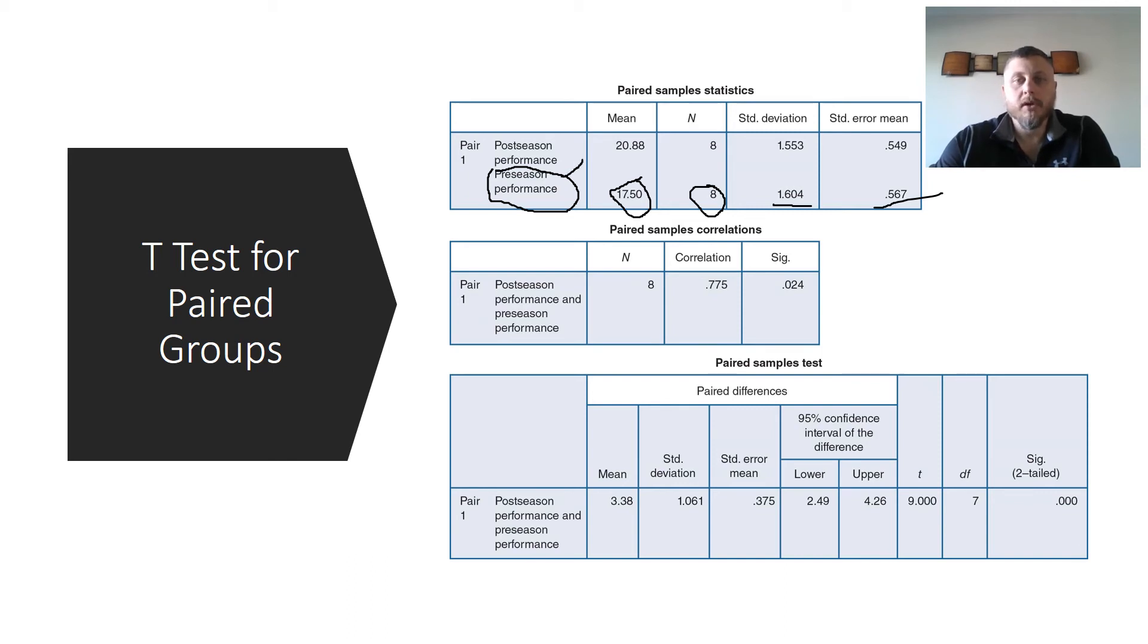Well, let's also look at this, from post-season to, or from pre-season to post-season, now we have an improvement. So we got 20.88 and 17.5, and we'll talk about the difference here in a second, but you can look at and see that there was undoubtedly an improvement in the mean scores. Again, still eight participants, standard deviation went down, and then the standard deviation error also went down.